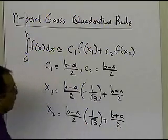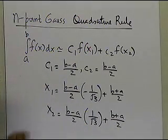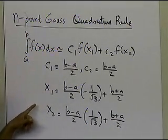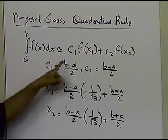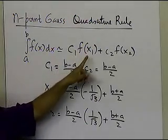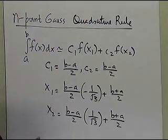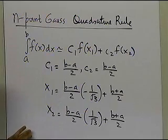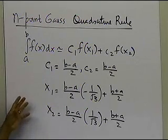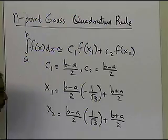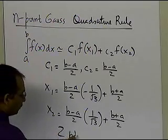So we were able to derive what c1, c2, x1, x2 are, based on the fact that since we have four choices — c1, x1, c2, x2 — we can get the exact value of the integral using this formula for a third-order polynomial. So that's the two-point rule, which is a fourth-order, two-point rule.